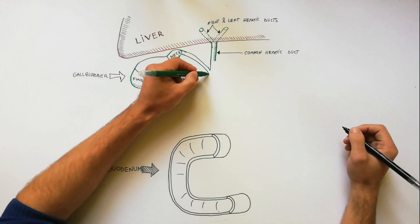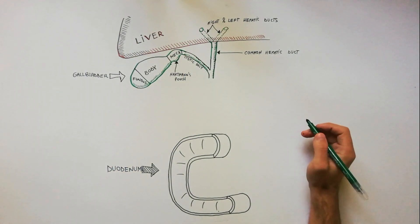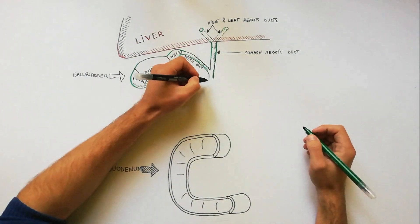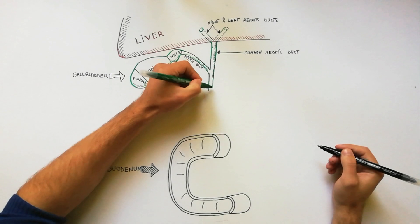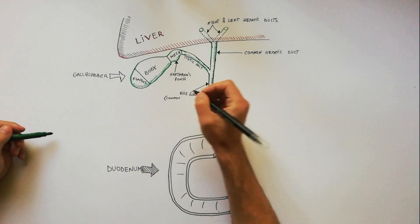The neck of the gallbladder is continuous with the cystic duct. The cystic duct joins at an acute angle with the common hepatic duct to form the bile duct, also called the common bile duct.